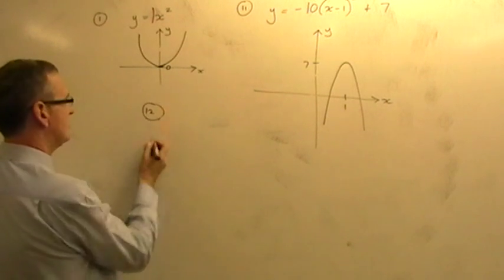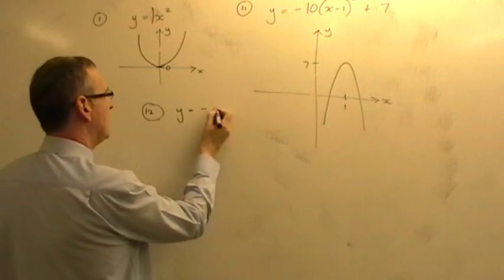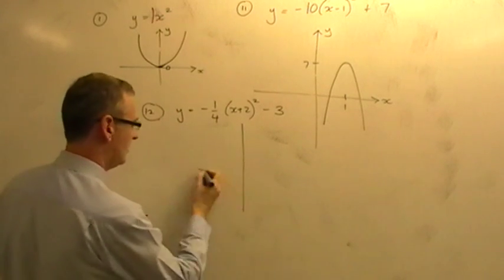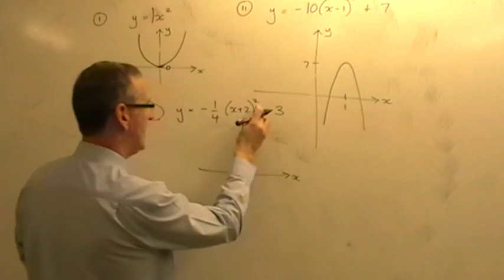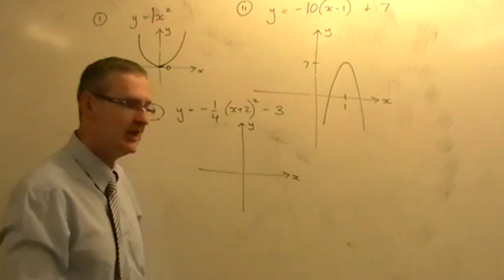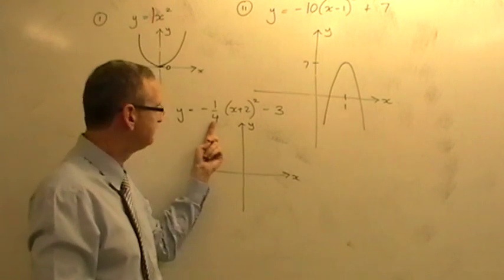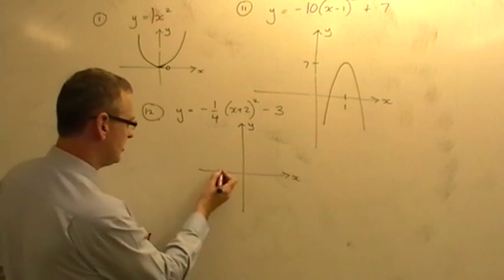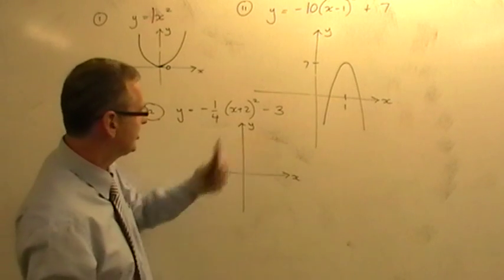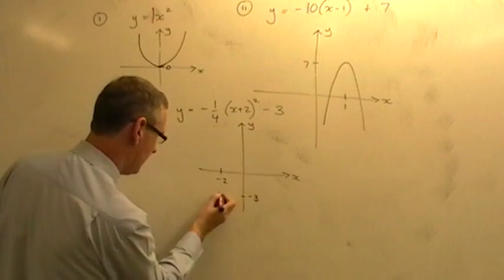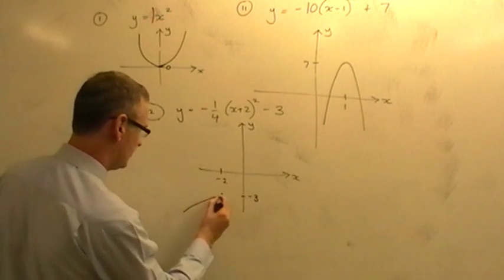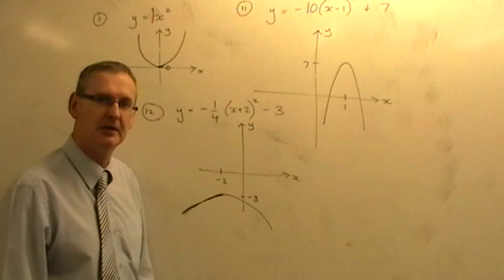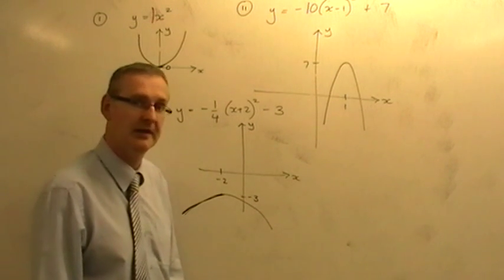One more: y equals minus a quarter, x plus 2, all squared, minus 3. It's quadratic because of the squared. The minus makes it an n-shape. It's very shallow because of the small number, a quarter. The plus 2 inside the bracket moves it two places left, so you go to minus 2 on the x-axis. The minus 3 moves it three places down. You draw a shallow n-shape with its peak at that position — minus 2, minus 3. And that is how you sketch quadratics very quickly.